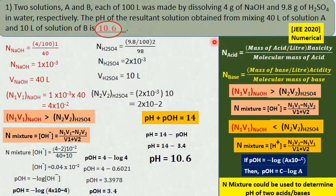Numericals carry 4 marks. Even if the answer is wrong, you do not lose marks, so it is very good to attend numericals. These two shortcut methods work: depending upon which concentration—acid or base—is more, you can get either normality of hydroxyl ion or hydrogen ion. If hydrogen ion concentration is required, equivalents of acid must be more than that of alkali.